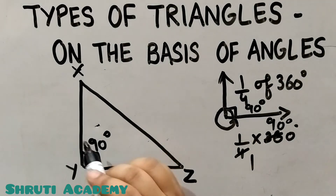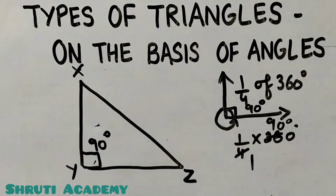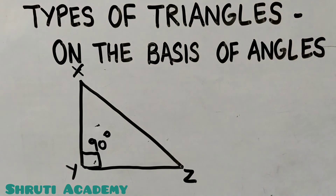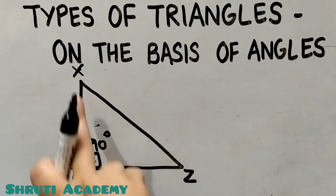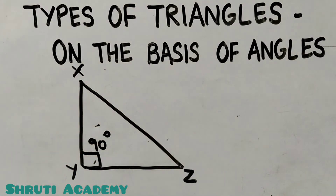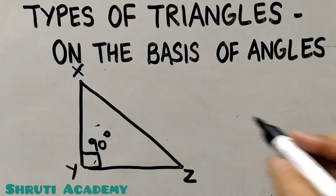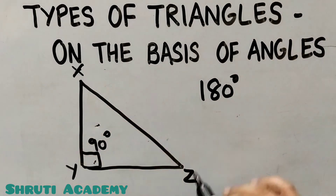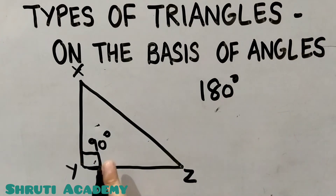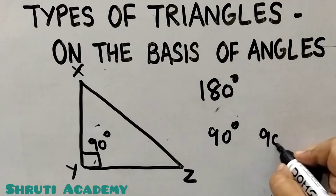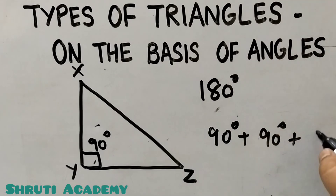So if one angle is 90 degrees, what kind of triangle is it? A triangle has three vertices and therefore three angles, and the sum of all angles of a triangle is 180 degrees. If one angle is 90 degrees, the remaining two angles together make 90 degrees, so they must both be less than 90 degrees — both are acute angles.